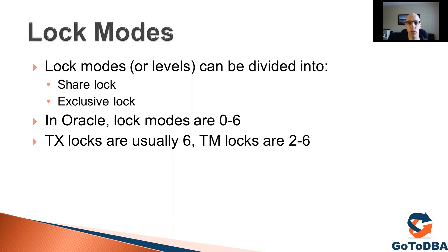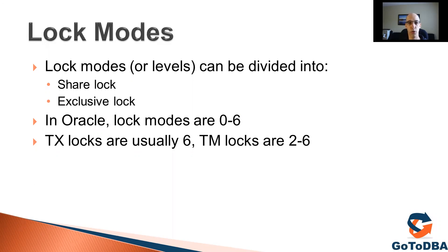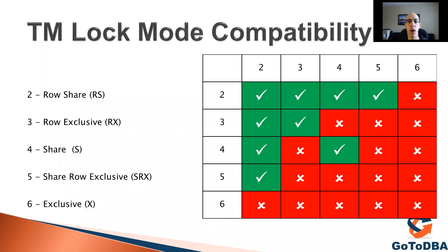In Oracle, lock modes are represented as numbers from 0 to 6, where 0 is no lock and 1 through 6 are locks. TX — the row-level lock — is usually mode 6, exclusive. TM — the table-level lock — can vary between 2 and 6 depending on exactly what operation you're doing on the table. As the number is higher, the lock mode is more aggressive.